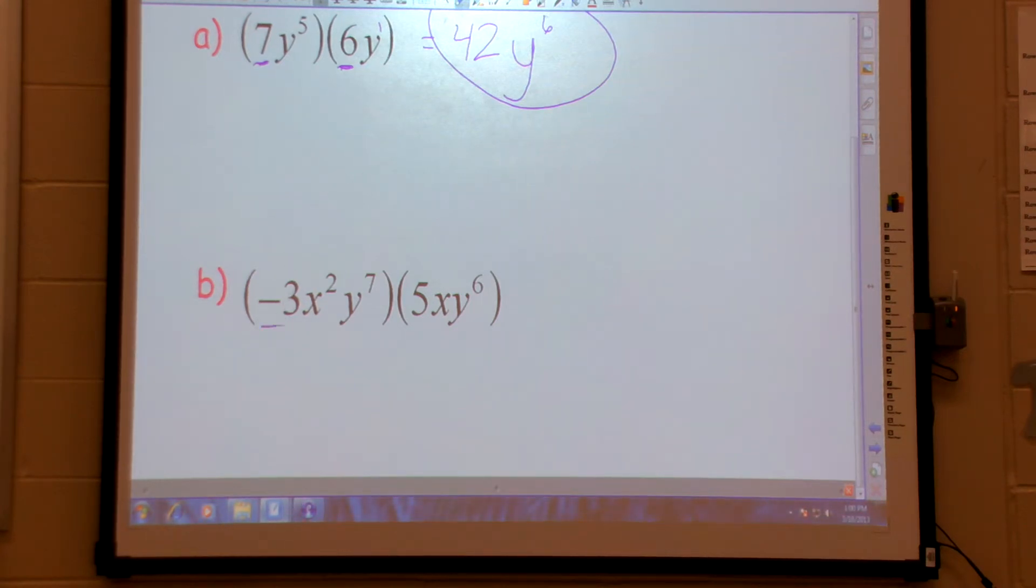Okay, do we see how these are coefficients because they don't have any powers to them, really? So I multiply those. That is negative 15. I'm going to go ahead and write x and y. When I add the x's powers, what do I get? 3. Add the y's, I get 13. Voila. Voila.